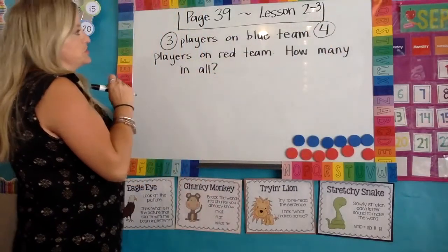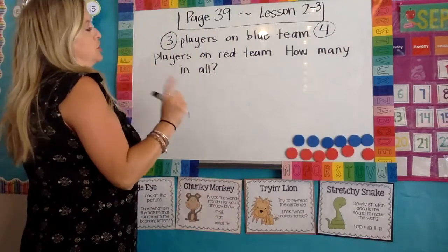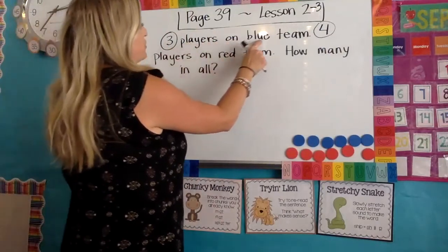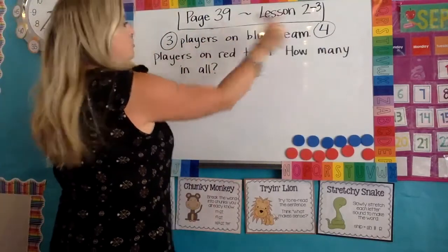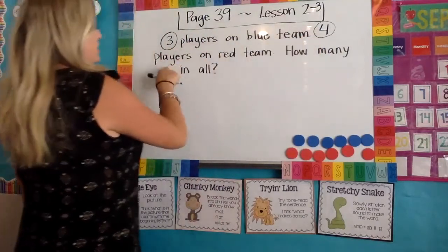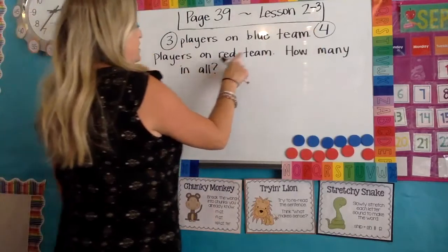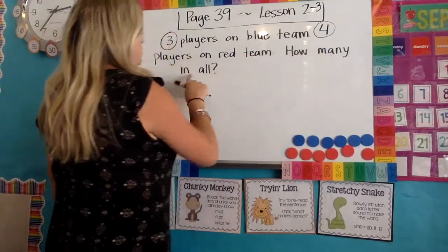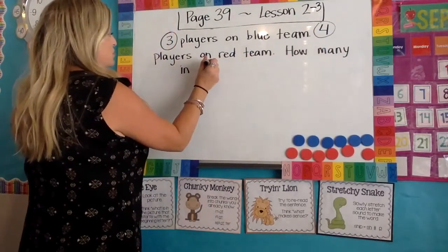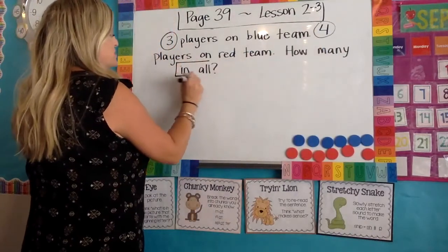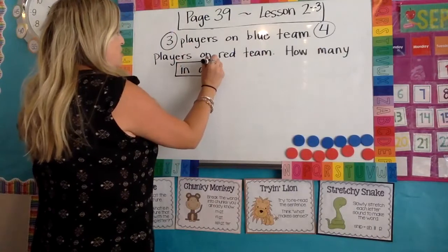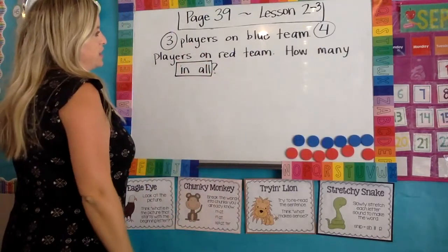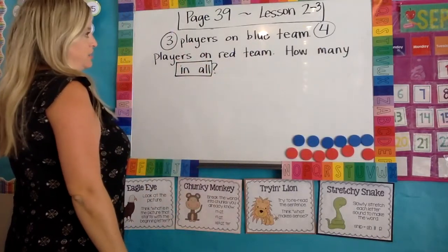Now I'm looking for other words that I might need to know. Three players on the blue team. Four players on the red team. How many in all? I'm going to circle or put a box around 'in all' because that tells me I am adding.